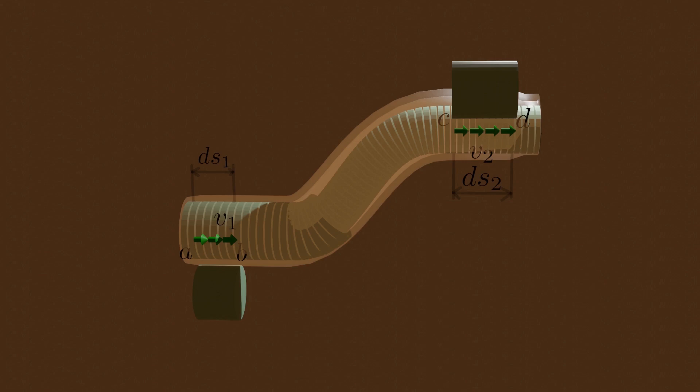Now let's compute the work done on this fluid during small time DT. For zero viscosity or zero internal friction in the fluid, forces that do work on the fluid element are due to the pressure of the surrounding fluid. Forces are shown in red arrows.